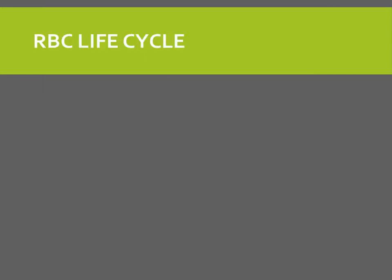The red blood cell lives about 120 days. It cannot synthesize new components — because it doesn't have a nucleus. Ruptured red blood cells are removed from circulation and destroyed by fixed phagocytic macrophages in both the spleen and liver.